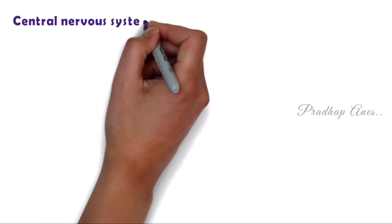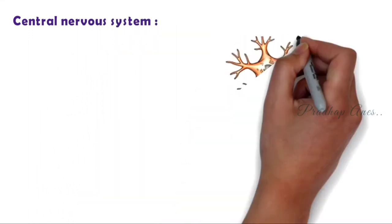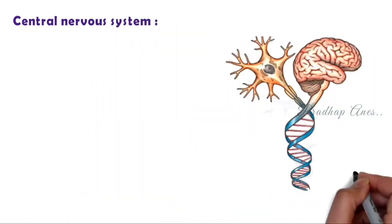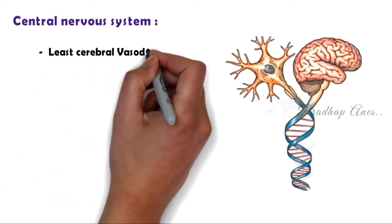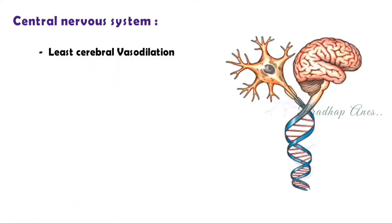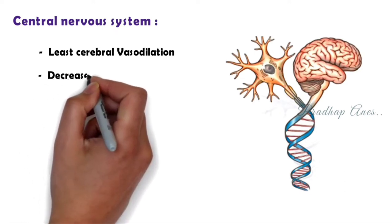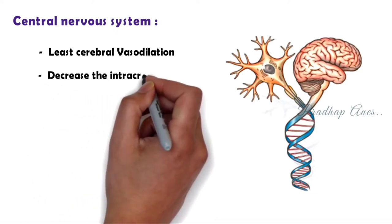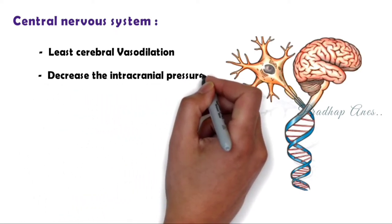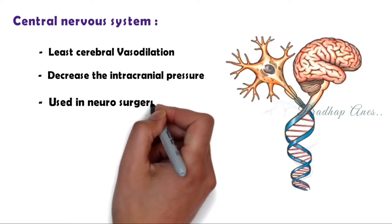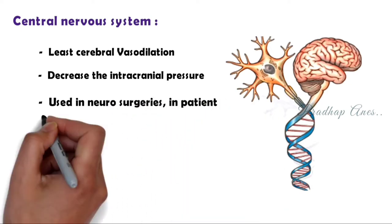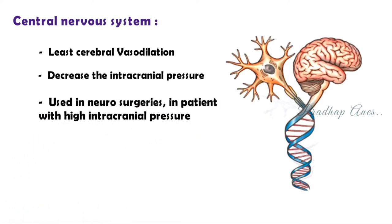Central nervous system: Sevoflurane causes the least cerebral vasodilation, so it decreases intracranial pressure. Therefore, it can be used in neurosurgeries in patients with high intracranial pressure.